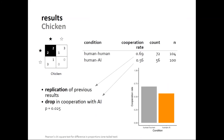In the Chicken game, cooperation between humans was high — around 70%, again a replication of known results — but cooperation with AI agents dropped from nearly 70% to 56%, and the drop was statistically significant.